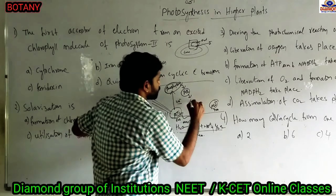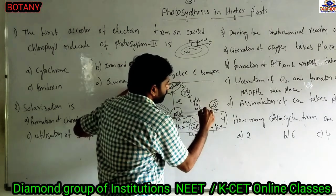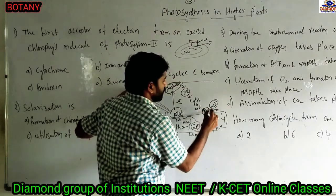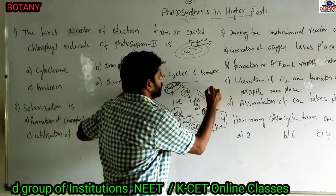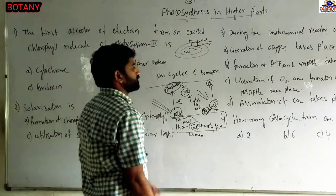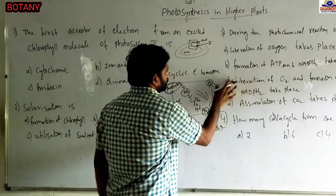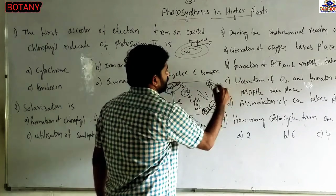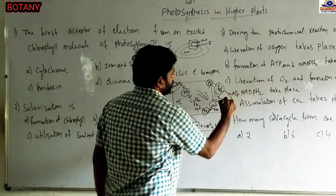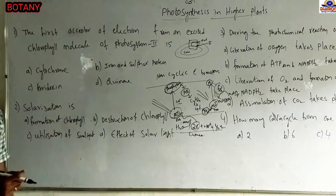From plastoquinone, electrons transfer to cytochrome B6F complex, then to plastocyanin — a mobile electron carrier. From plastocyanin, photosystem 1 receives the electrons. Photosystem 1 sends electrons to an unknown component, and plastocyanin donates electrons into photosystem 1. From there, ferredoxin receives the electrons, and NADP is converted into NADPH2.